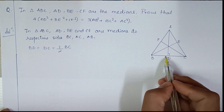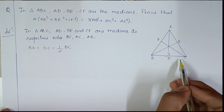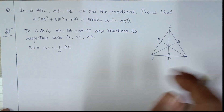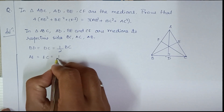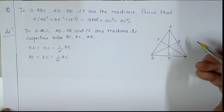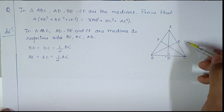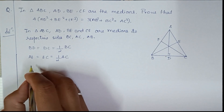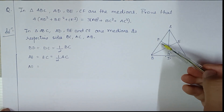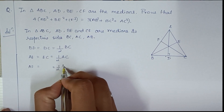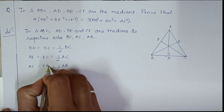Similarly, AE equals EC, which equals half of AC. And AF equals FB, which equals half of AB. These are the median properties we will use in the solution.